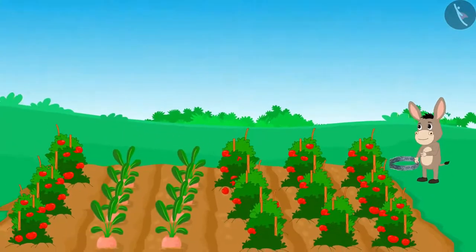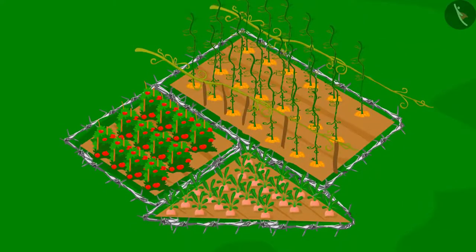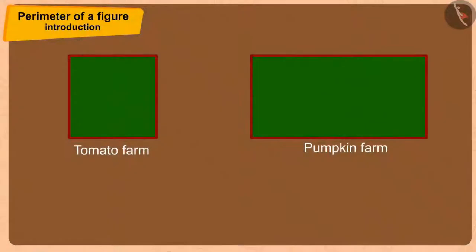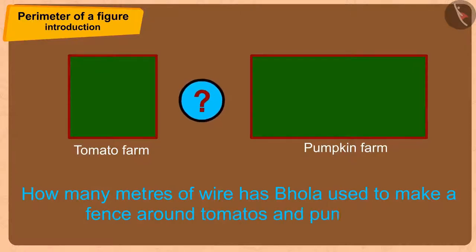Initially, Bhola made a fence for that part of the field in which tomatoes and pumpkins were sown. If tomatoes and pumpkins have been cultivated in these types of square and rectangle shapes, can you answer how many meters of wire has Bhola used to make a fence around tomatoes and pumpkins?